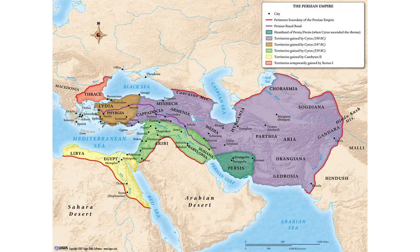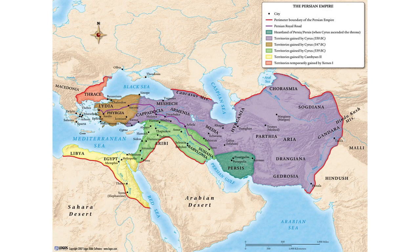The Persian Empire was massive — the largest empire in world history to that point in terms of territory covered. The story of Esther takes place in the city of Susa, which was the capital city of the Persian Empire during Esther's life. It's in modern-day Iran, so it's not an easy tourist destination, but you can visit the city of Susa and some of its remains to this day. All of the book of Esther takes place there.